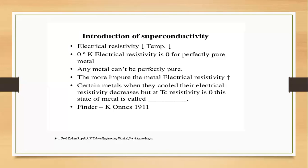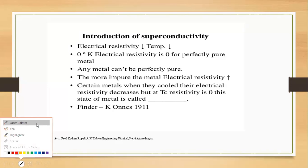Resistance R is equal to rho times L times T divided by A. This means resistance depends upon the length, temperature, and area. Suppose in a conductor, temperature decreases — the resistance also decreases.